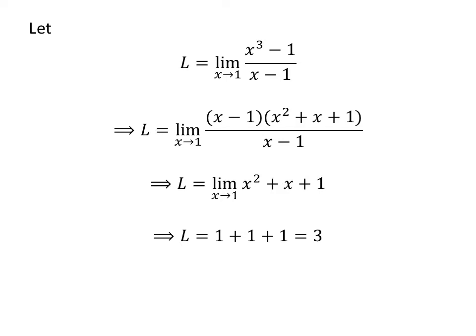As x squared plus x plus 1 is a continuous function at point 1, we can plug in 1 for x. This leads us to L equals 3.